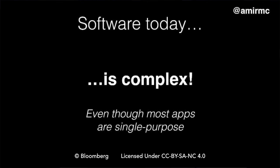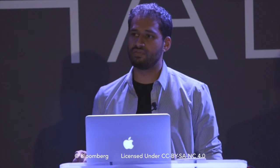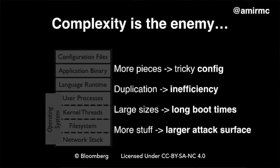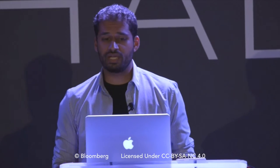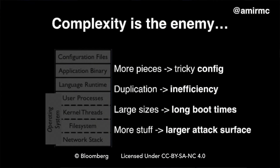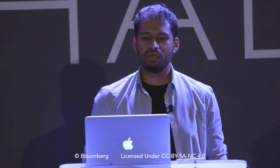Overall, software today has become complex. Even though most of the applications we build and ship are single-purpose — especially in this era of microservices, when deploying things to the cloud where it just has one job — complexity is the enemy for those kinds of services. The more pieces you have, the more tricky it is to configure them to work together. More duplication means more inefficiency. Deploying virtual machines each containing their OS with a single-purpose application on top is a lot of unnecessary duplication. Because these things can be quite large, there's a lot of inertia — slower boot times, more effort to move things around, and generally the more stuff you have, the larger the attack surface.